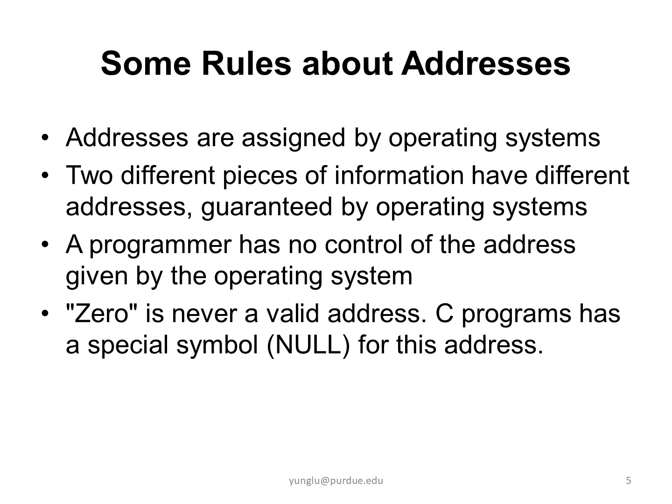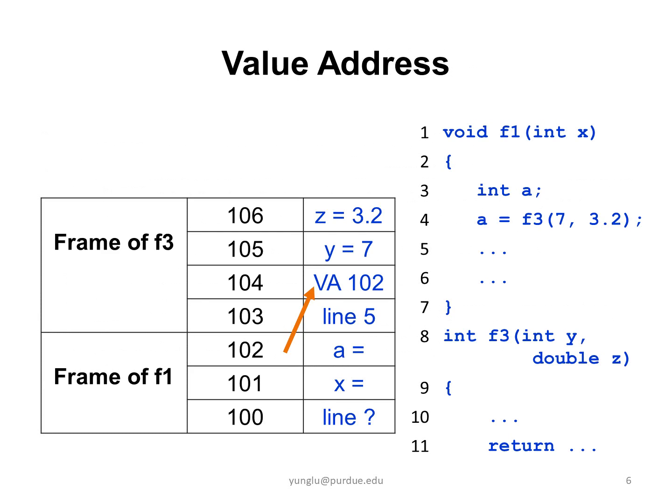We will see how this symbol can be used in later lectures. The fourth type of information that can be stored in the stack memory is called the value address. So far, I have been ignoring the frame of F1. Since F1 is also a function, it follows the same rules.